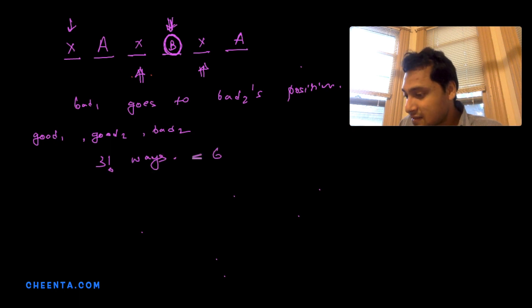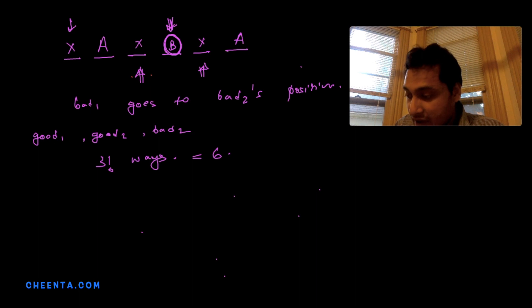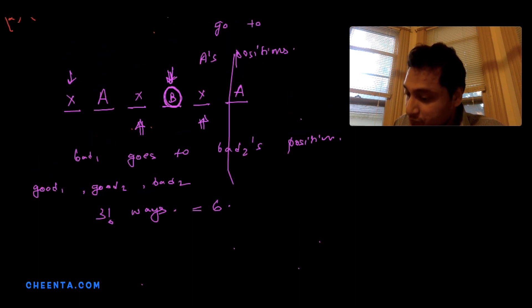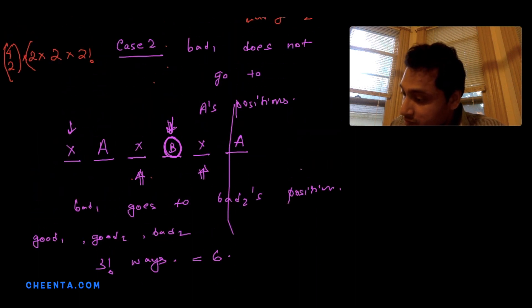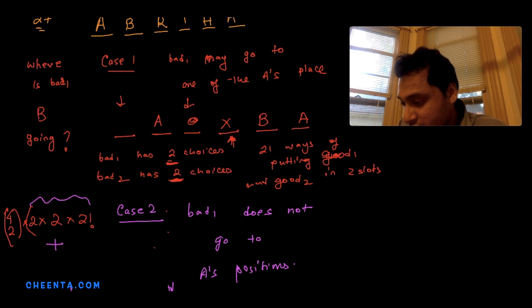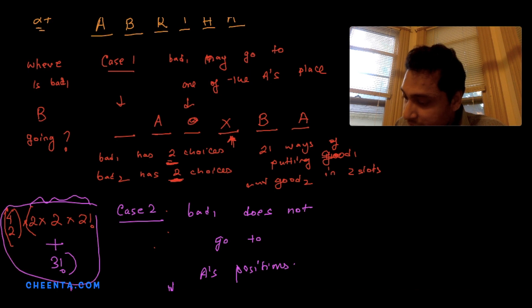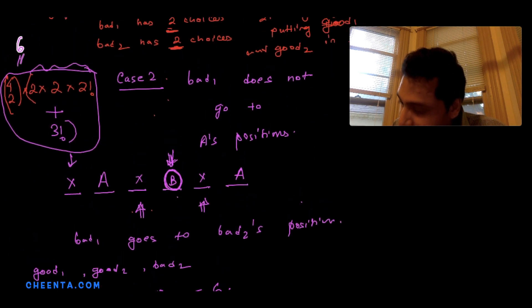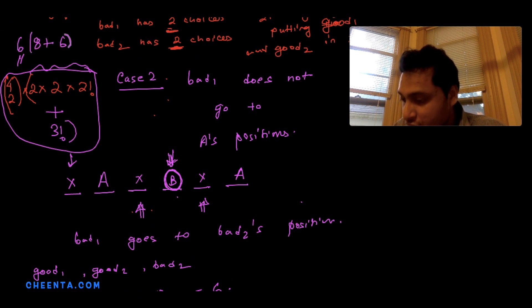Combining everything: C(4,2) × (Case 1 + Case 2) = 6 × (8 + 6) = 6 × 14 = 84. So the final answer is 84.